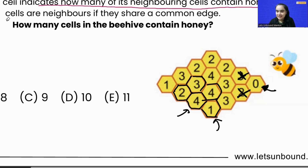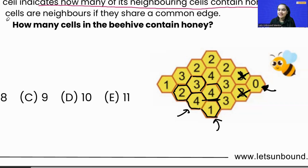But number one tells us that only one of its neighboring cells will contain honey. Here, however, two of the neighboring cells contain honey. So that means we did something wrong. Number four will NOT contain honey — that was the mistake.